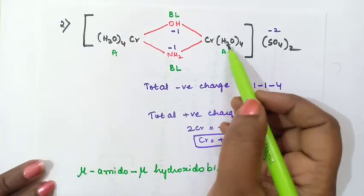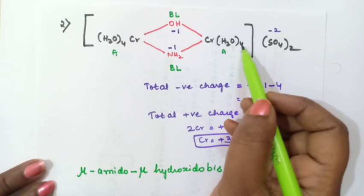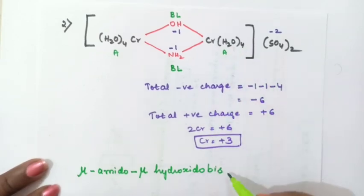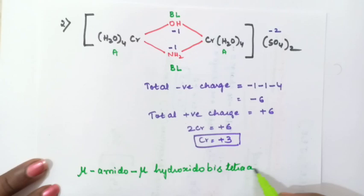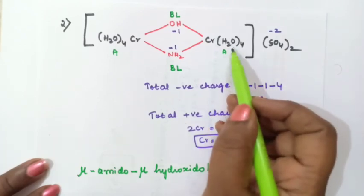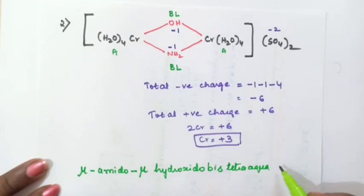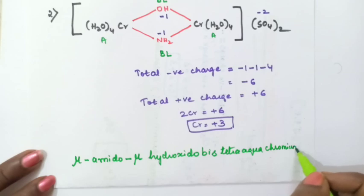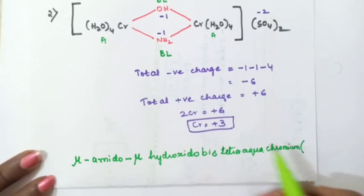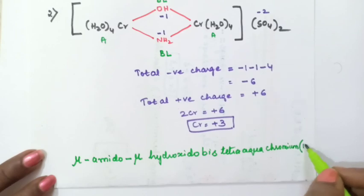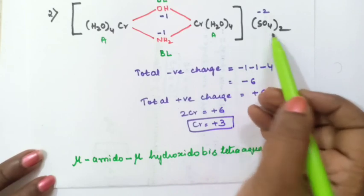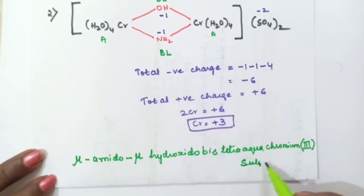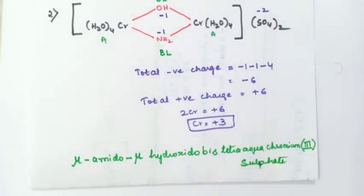Then write the name of A. Write the name of the ligand first: there are 4 water molecules, so tetraaqua (water = aqua). Then write chromium, and in brackets write oxidation state III. Don't write plus or minus inside the bracket. Then write sulfate. So the full name is: μ-amido-μ-hydroxido-bis(tetraaquachromium(III)) sulfate.